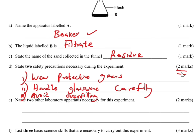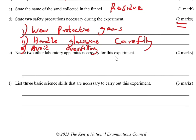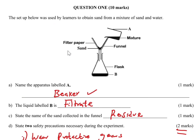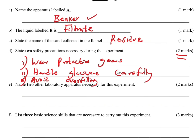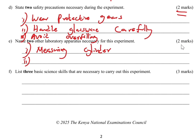Part E: name two other laboratory apparatus necessary for this experiment. Apart from the filter paper, the funnel, and the flask, which other apparatus do we need? One is a measuring cylinder for measuring the liquid. Tell us the other apparatus in the comments section so that you can also learn.